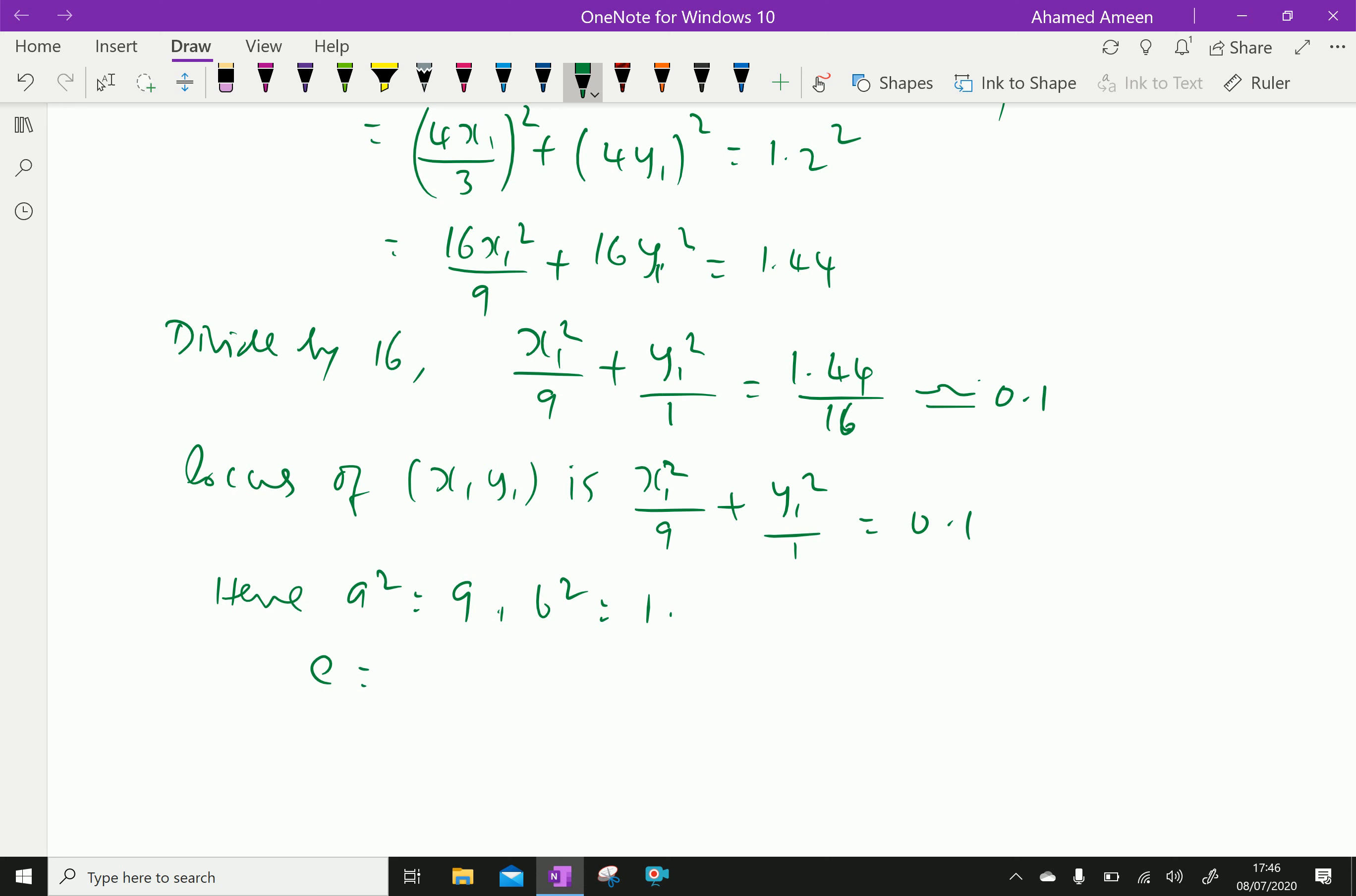Therefore eccentricity e equal to square root of 1 minus b square over a square equal square root of 1 minus 1 over 9, which is square root of 8 over 9, which is equal to root 2 over 3. Therefore, we got eccentricity. We have done.